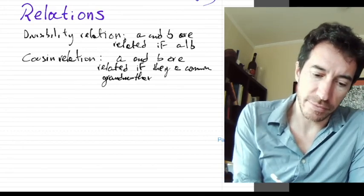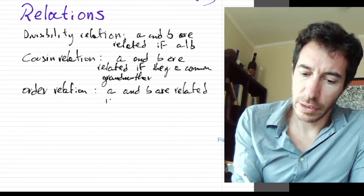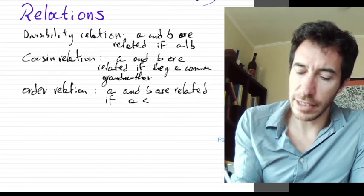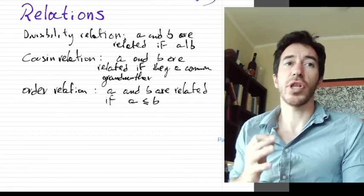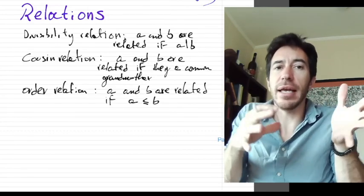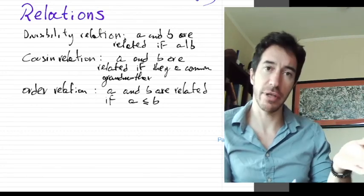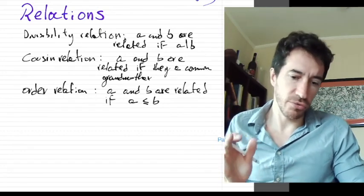Order relation: A and B are related if A is less than or equal to B. So that's what I mean by the word relation. It's something that relates elements, different elements in different ways. There are all kinds of relations. The concept is going to be very loose.